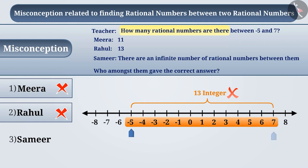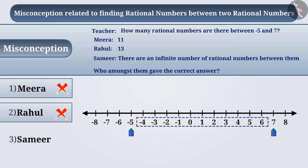When we find the numbers between any two numbers, we remove those two numbers from the count. Here Rahul has counted numbers between minus 5 and 7 including the numbers minus 5 and 7. Hence Rahul's answer is also wrong. Keep in mind that to find out how many numbers are there between any two numbers, we count all the numbers between them except those numbers.